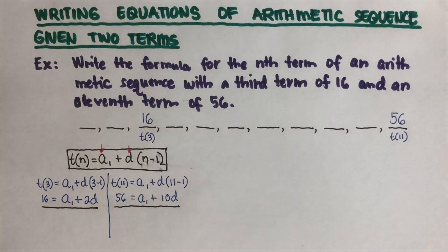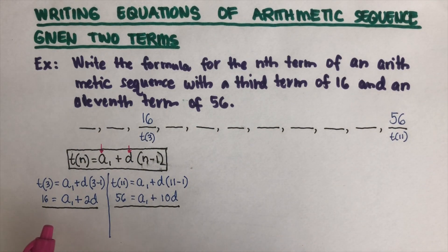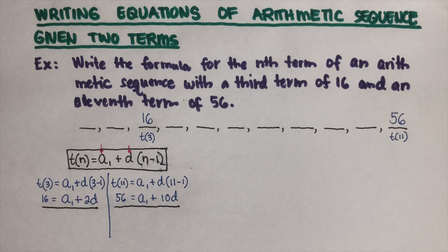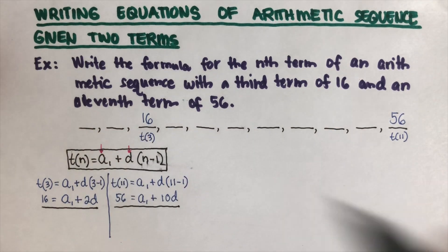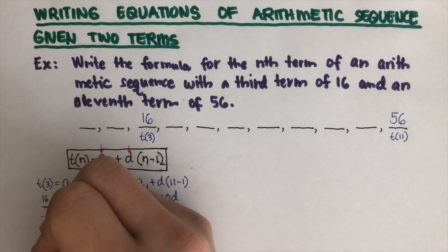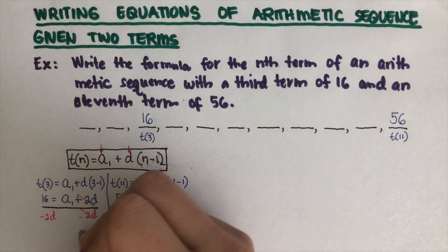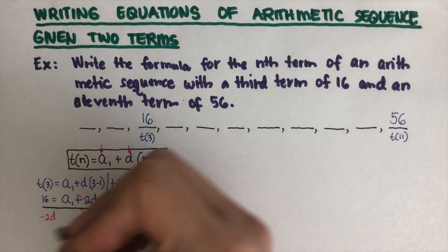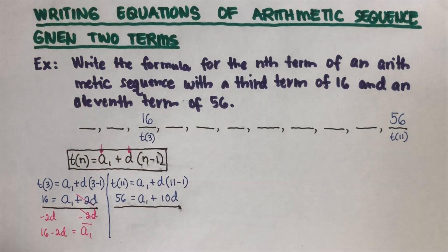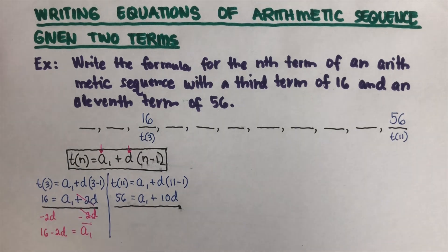Now that we have two equations, we can use either elimination or substitution. For this problem, we'll use substitution. From equation 1, we isolate a1 by subtracting 2d from both sides, giving us a1 = 16 − 2d.